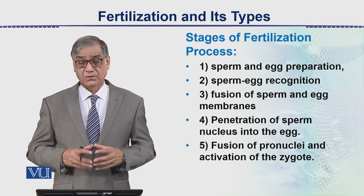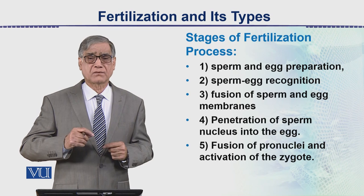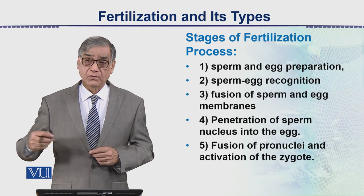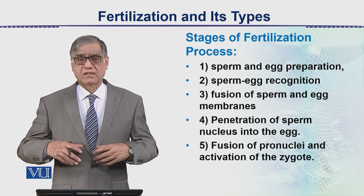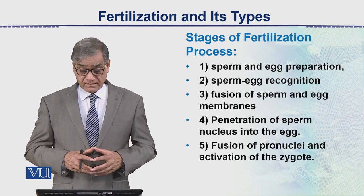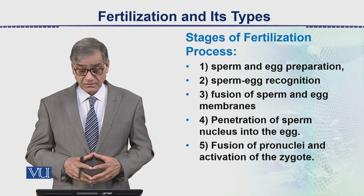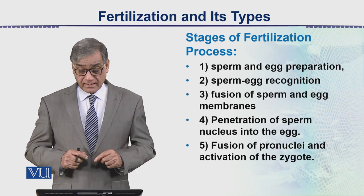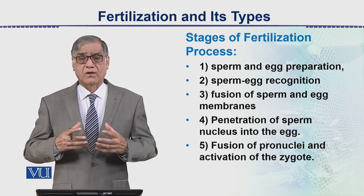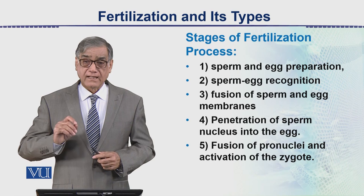Then there is a fusion of sperm and egg membranes — the egg membrane and sperm membrane become continuous. There is the formation of an aperture or hole through which the nucleus of the sperm enters and then fuses with the egg nucleus. Then there is penetration of the sperm nucleus into the egg, followed by the fusion of the pronuclei, and the diploid number of chromosomes is attained and zygote formation occurs.